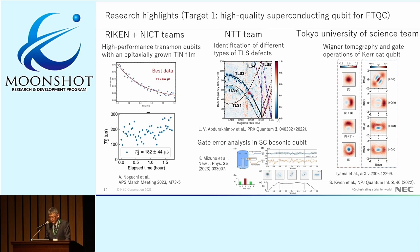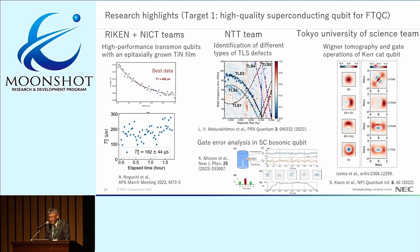In another result from the NTT team, using a spectroscopy method they successfully identified two different types of two-level fluctuators: charge fluctuators and critical-current fluctuators. This is useful for understanding the mechanism of two-level fluctuators. The team also reported theoretical gate error analysis in bosonic qubit experiments.